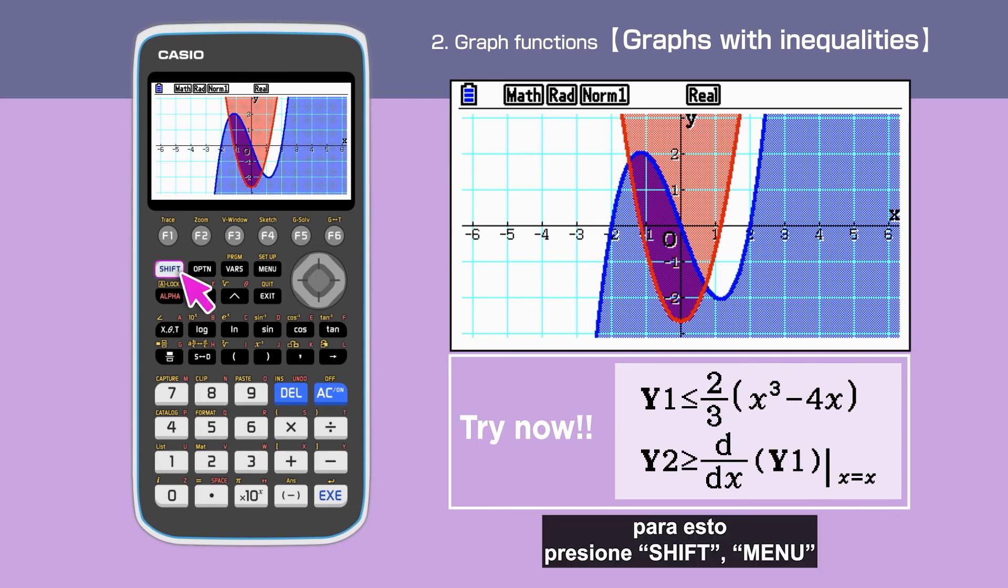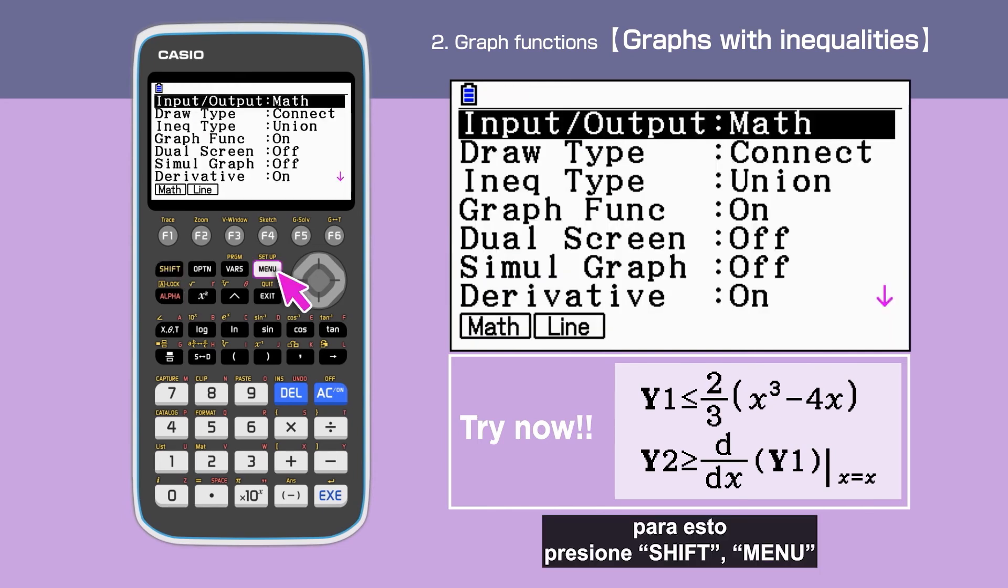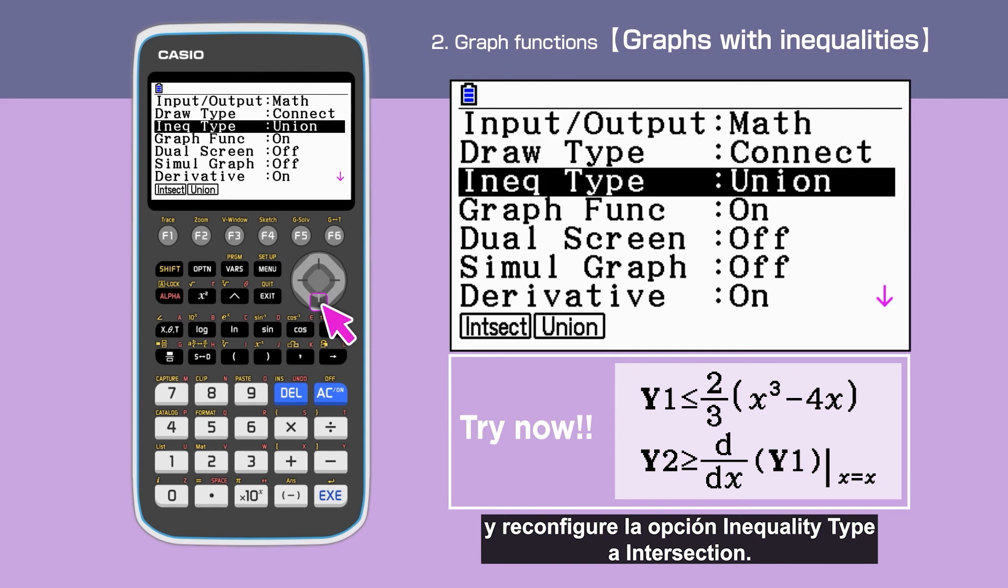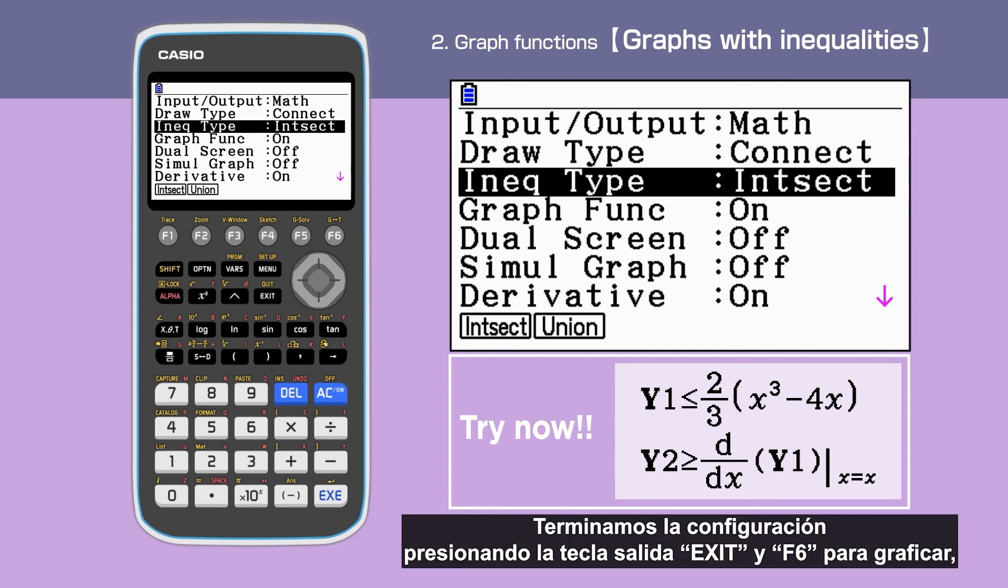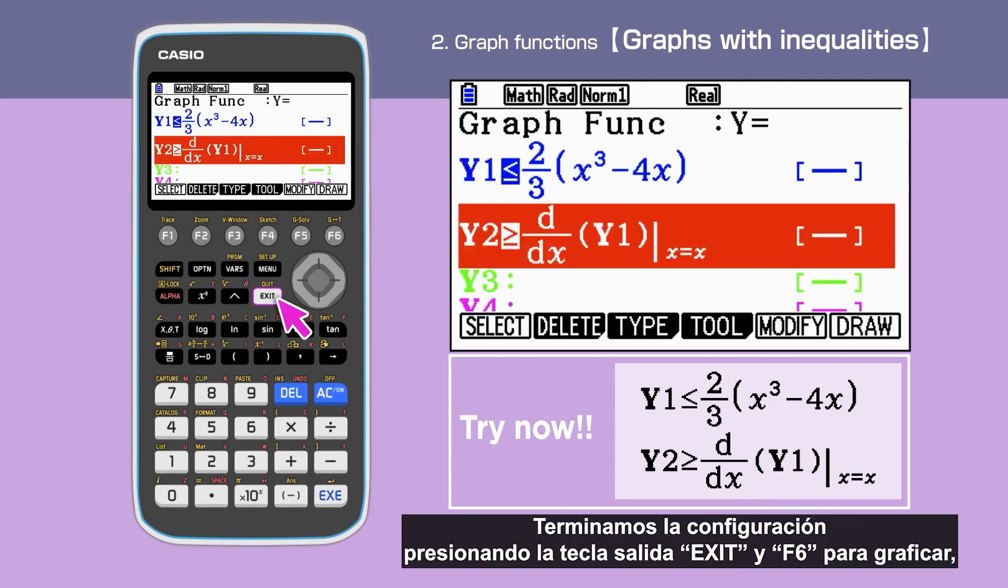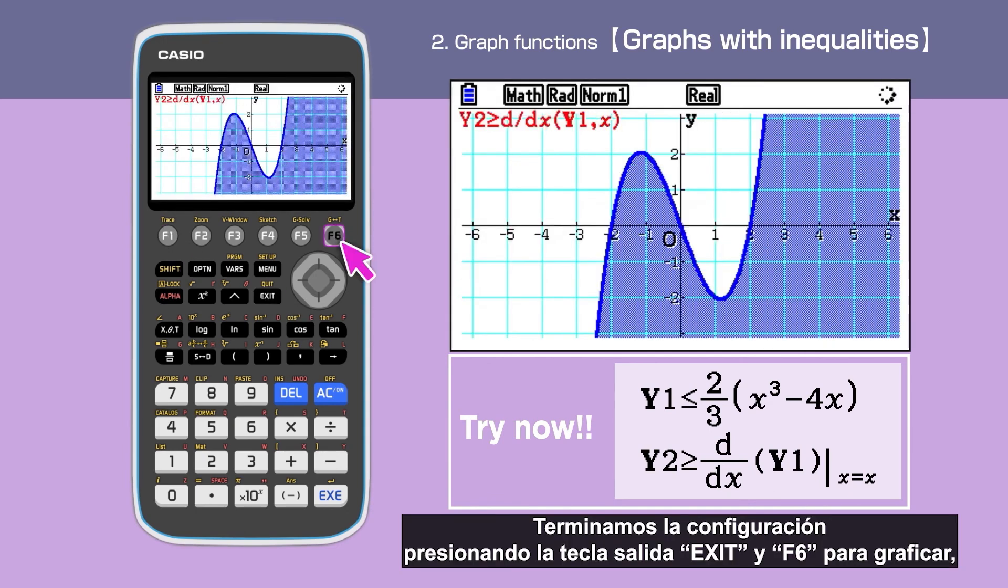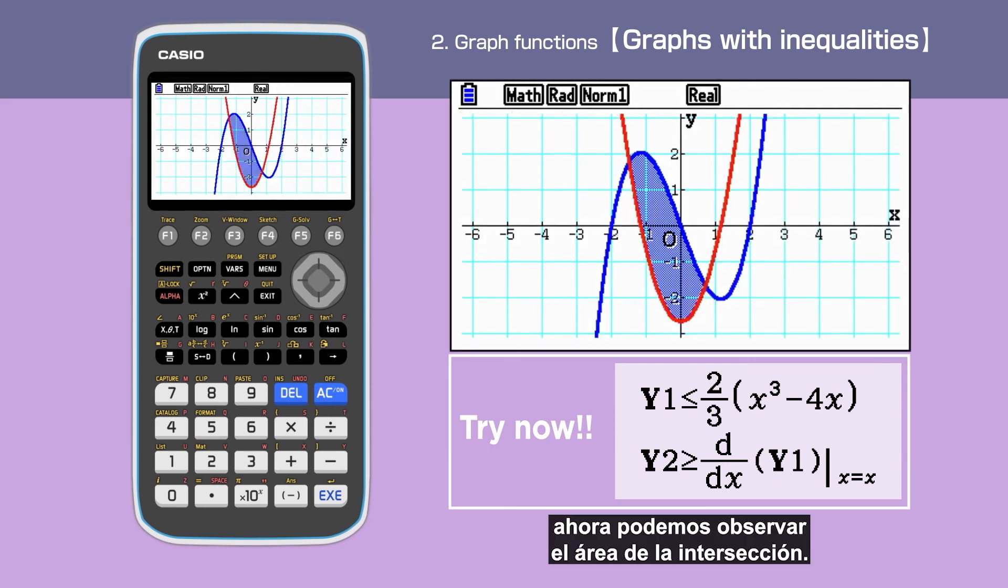To do this, press Shift, Menu, and change inequality type to intersection. We finish setting up by pressing Exit and Enter F6 to draw. Now we have the intersection area highlighted.